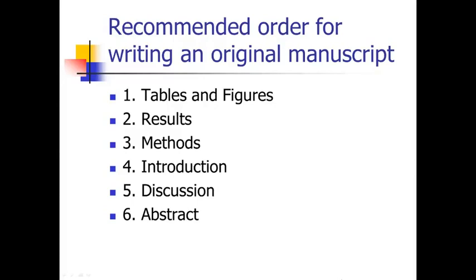Then the next thing I would do is write the introduction section. You could technically write it before the other sections, but knowing the story that your data tells helps you set up the introduction, so I write it fourth. Then I write the discussion section — that's of course the hardest to write because it involves the most writing and is the most complex. And I leave the abstract to write for the very end. Don't try to write your abstract before you've written the other sections, because the abstract is just pulling a little bit from each section — so it's much easier to write after you've done the rest.